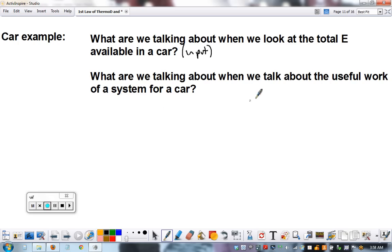For the total available energy, this is usually joules, levels of potential energy. This is chemical potential energy in the gasoline—that's how much is available in a full tank.